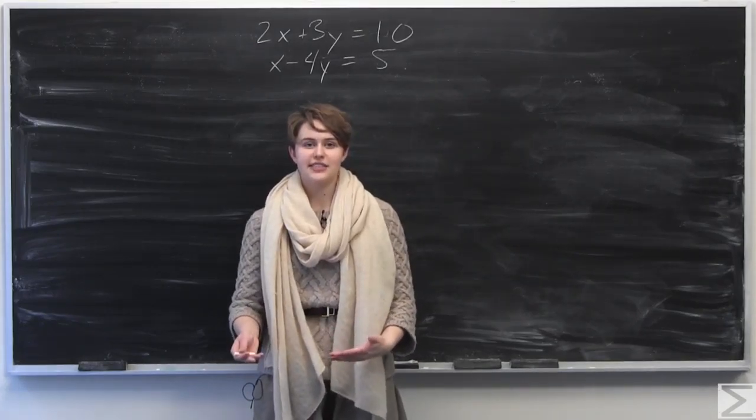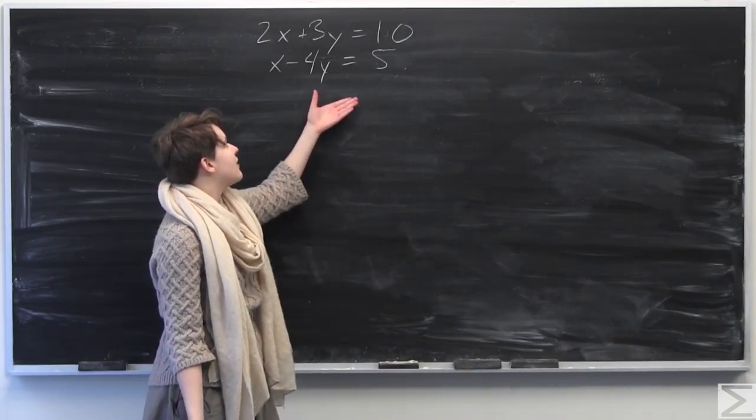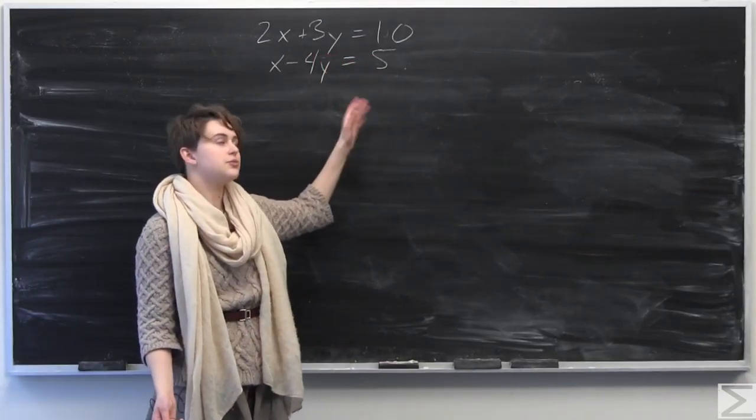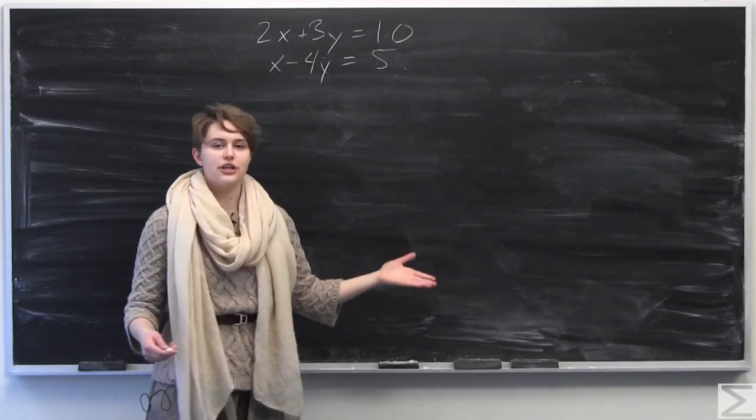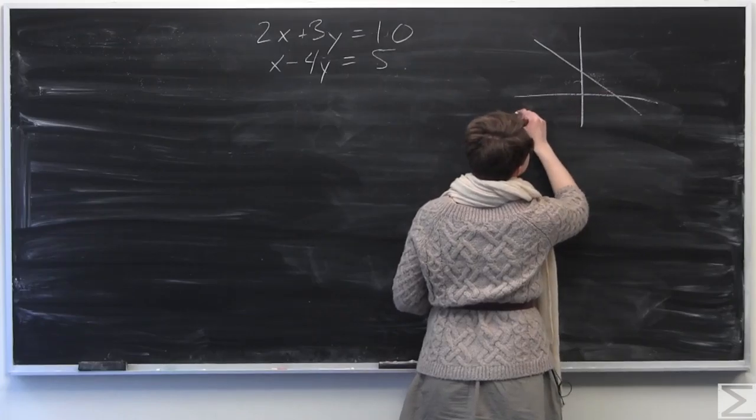OK, so when we're asked to solve a system of equations, what are we really trying to do? So in a case like this, when we have a system of two equations with two variables here, what we're really trying to find is we have two lines here. We have two lines, something like this.